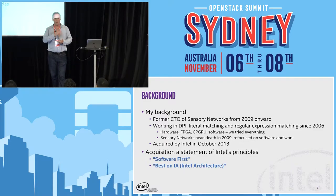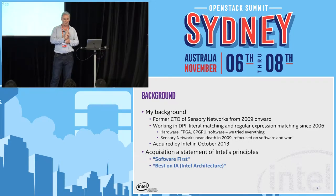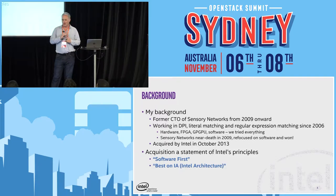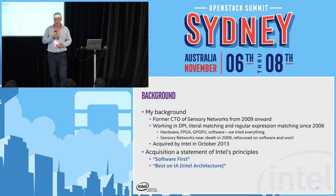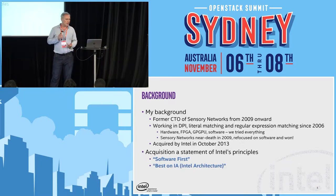So we tried hardware. We tried GPGPU — at one stage I had the best gaming rig in Sydney and never got to run a single game on it, but I had some beautiful Nvidia cards to do GPGPU programming. We tried all sorts of things. In the end, we came around to the conclusion that the right way to do regular expressions was in software. In 2009, we almost died as a company. We refocused on software and we won. We got a bunch of tier-one vendors, became profitable, and Intel acquired Sensory Networks in October 2013.